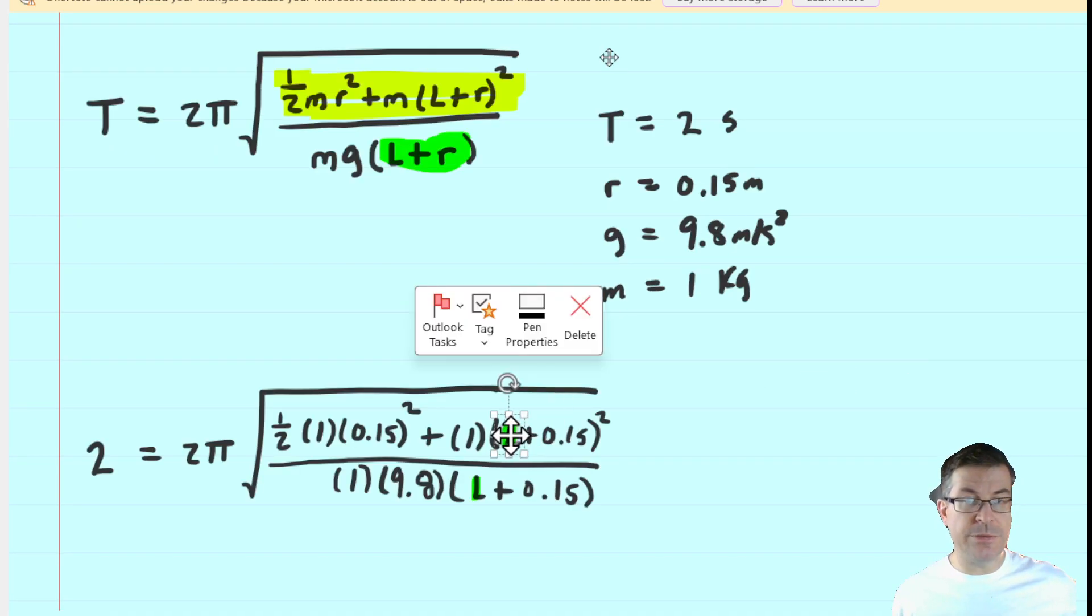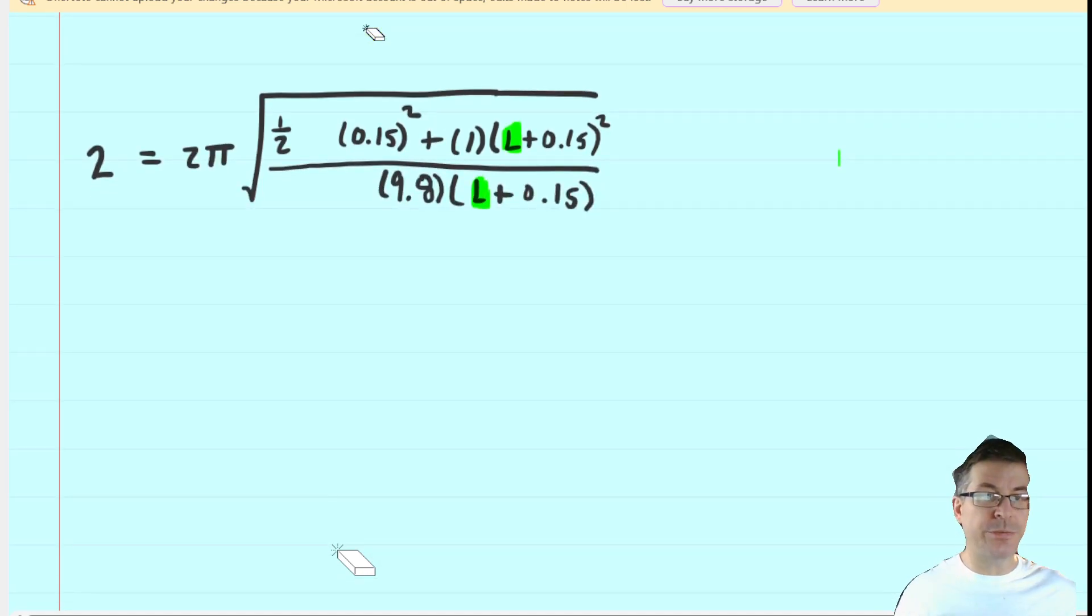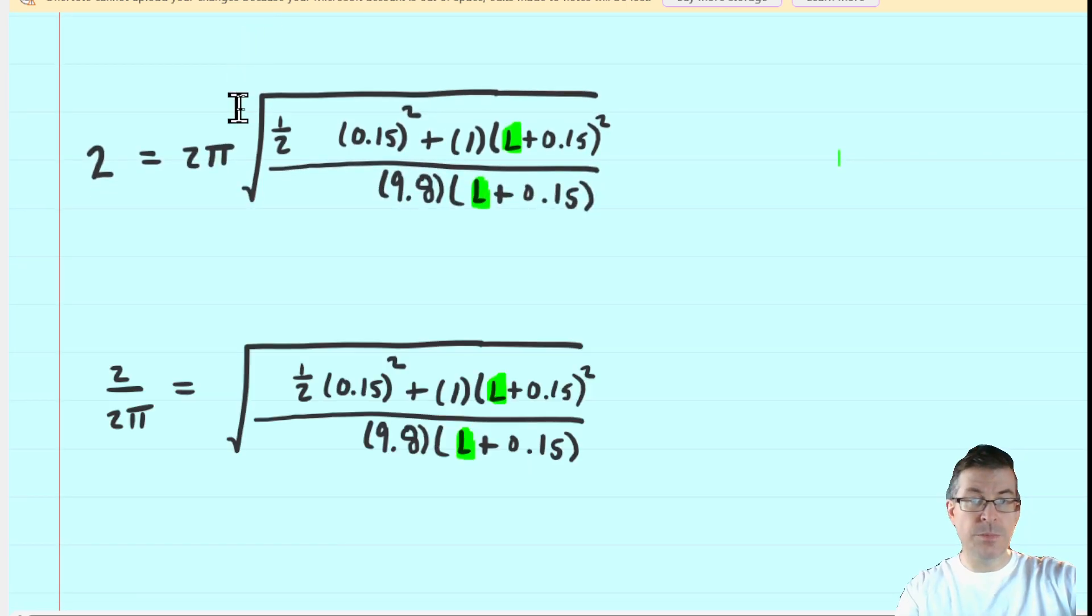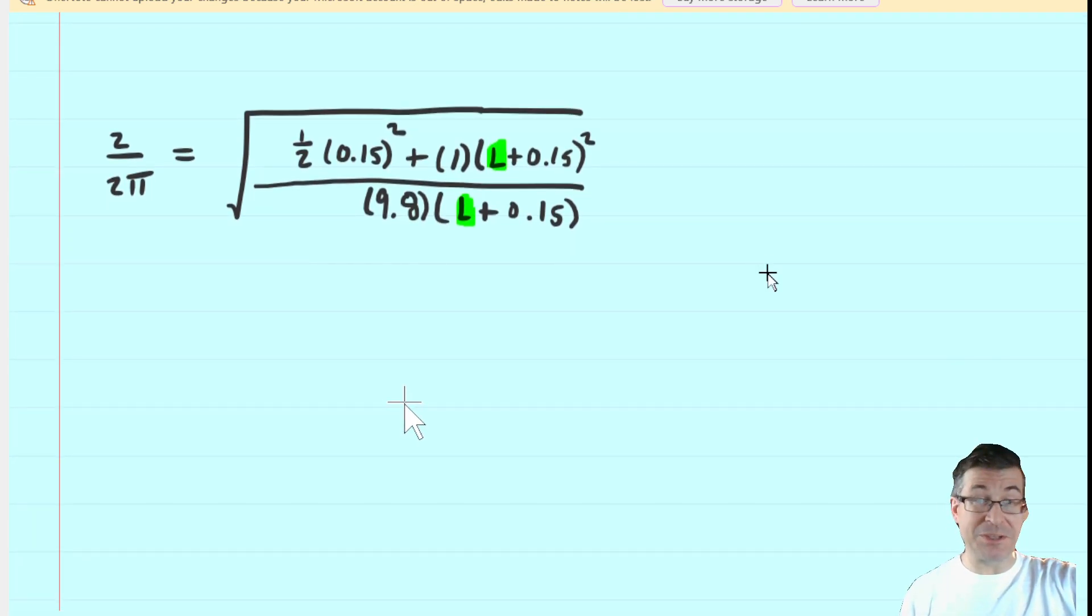Now our goal in this problem is to find that length l, so we are going to highlight that in green so we know what we are up against. We can begin to simplify the formula a little bit. These ones in the equation don't matter, because multiplying anything by one doesn't change its value, so we are just going to get rid of those. Next we will divide both sides by two pi.